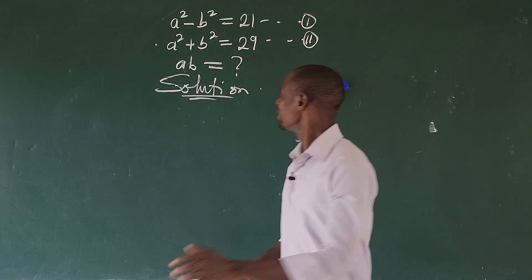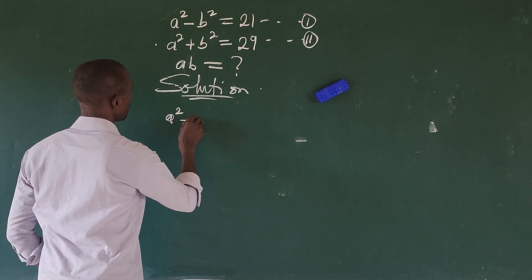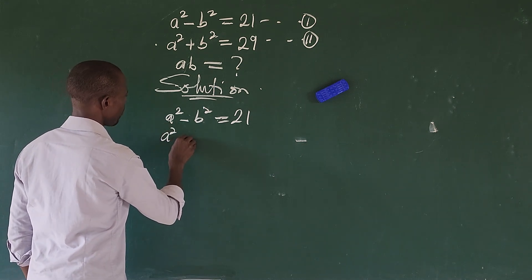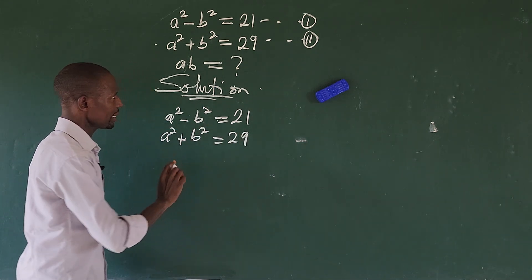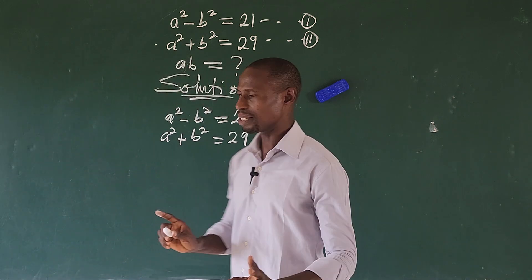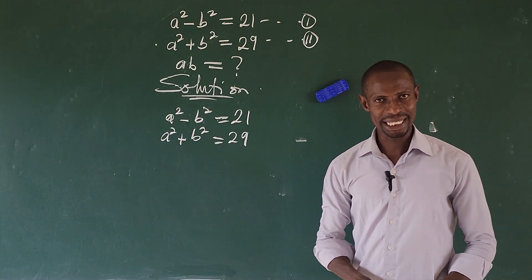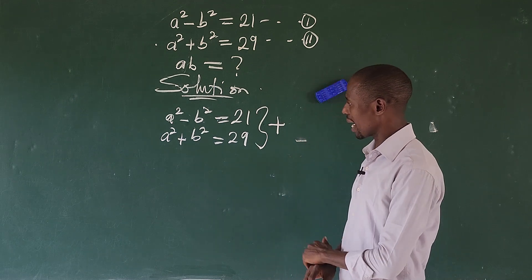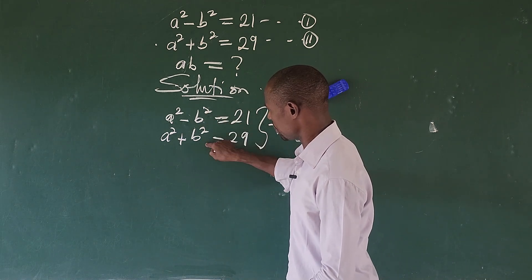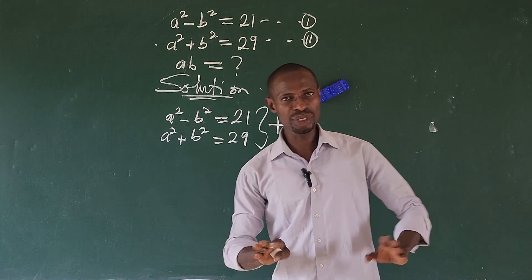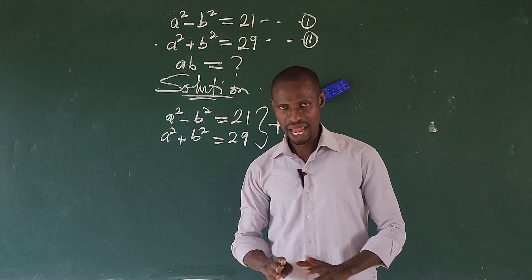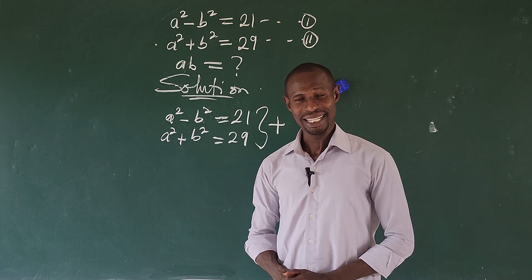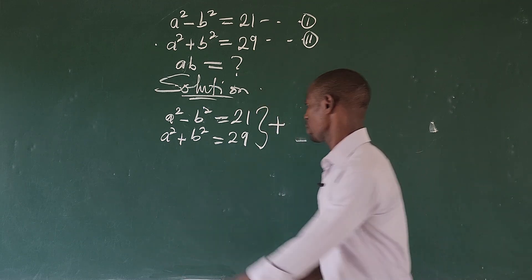We have equation one: a squared minus b squared equals 21, and equation two: a squared plus b squared equals 29. Using elimination, we want to eliminate b. The signs on b are minus and plus, so the rule says: minus-plus means you add the equations.